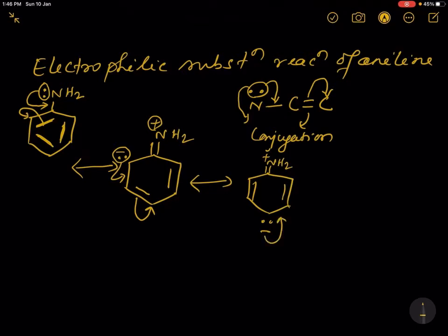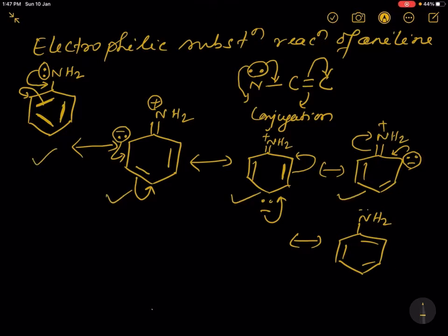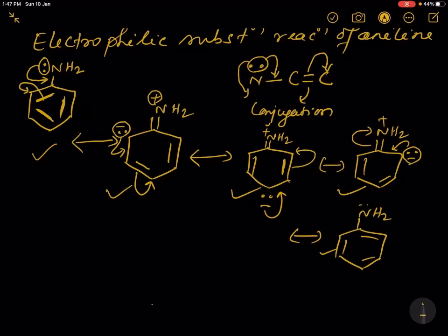This negative charge will form a double bond and the double bond is shifted to the next ortho position. We can draw the next resonance structure: this negative charge forms a double bond and the pi bond is shifted, giving us the next resonance structure. In total there are five resonance structures, and you can see that negative charges are developed on ortho and para positions.